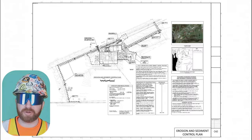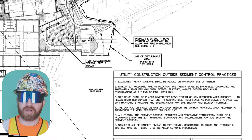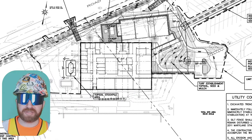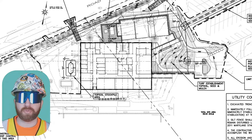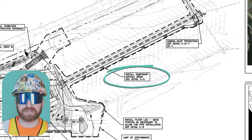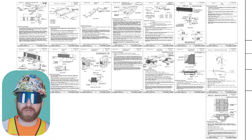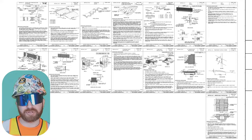Moving on to C4.0, the erosion and sediment control plan. As heavy equipment loosens all this dirt and sediment, there has to be a means to control it from leaving the job site during heavy rainfall. At the entrance of the construction site, there's a tracking pad — usually loose stone put down to keep dirt from falling off truck tires as they leave onto city or county roads. There's also a temp asphalt berm note, which references a detail on the C5 page.